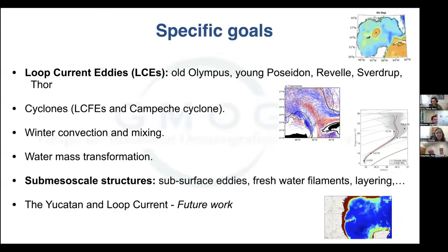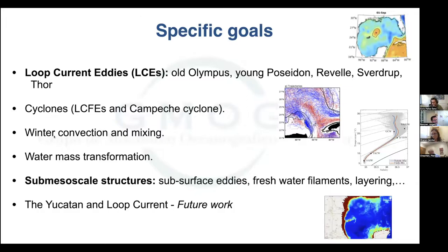We have specific goals during these years of monitoring since 2016. We've been monitoring mesoscale structures like large warm anomalies or loop-current eddies. We also sample cyclonic eddies in the Gulf of Mexico, like the Campeche cyclone in the southwestern Campeche Bay, or smaller cyclones like loop-current frontal eddies that propagate upstream the loop-current. We're also interested in winter convection, mixing, chlorophyll intensifications inside eddies, and water mass transformation. And because of the high-resolution data that gliders provide, we've been sampling submesoscale structures like small intrathermocline eddies, subsurface eddies, fresh water filaments, and layering on the peripheries of the eddies.